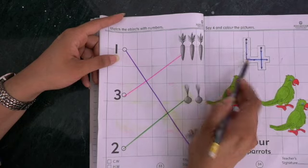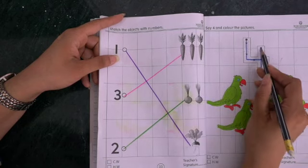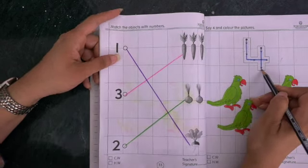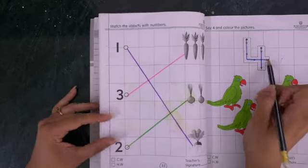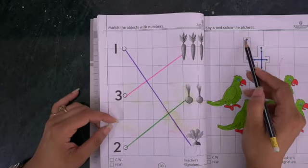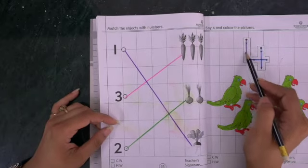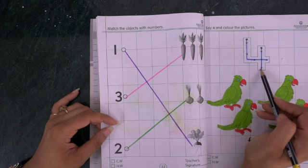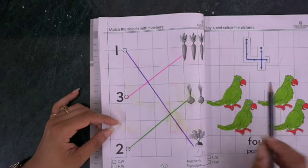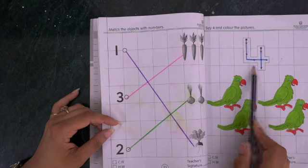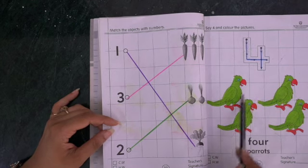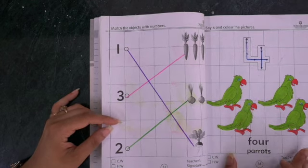Iska matlab kya hai? Dot se humne join karte huye niche leke aana hai, arrows ko follow karna hai, aur humne is tarike se formation karna hai numbers ki. This is for parents. Please understand that following the dots with arrows, you need to teach the child this way at home. This is number four.